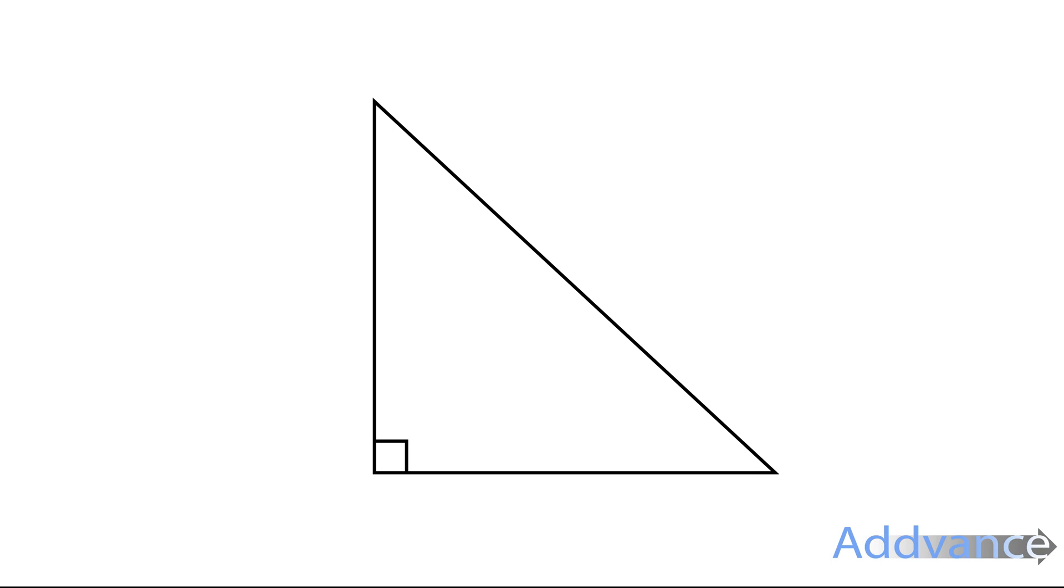Pythagoras' Theorem is about right-angled triangles. And when we've got a right-angled triangle, we can label it A, B and C. C is always the longest length of the triangle, opposite the right angle, and A and B are the other two sides, doesn't matter which way round they go.